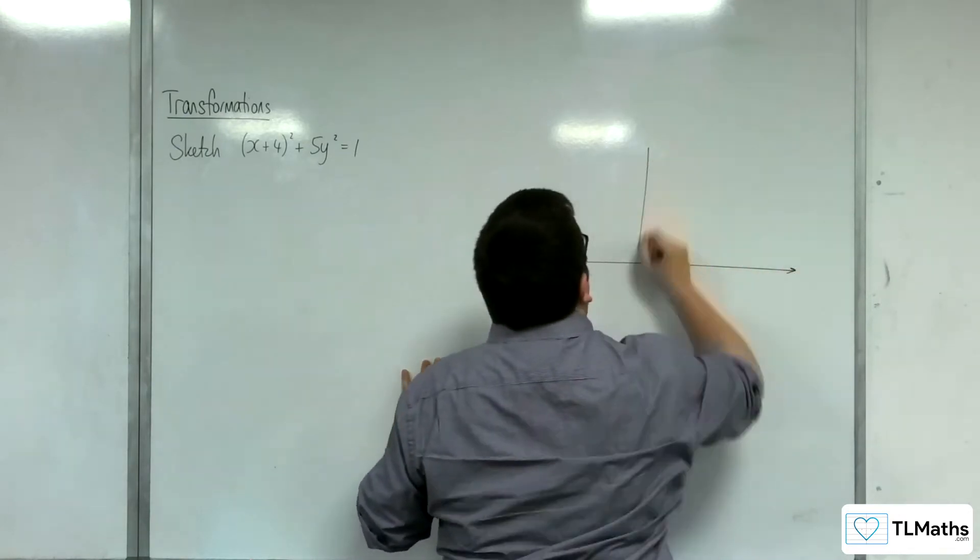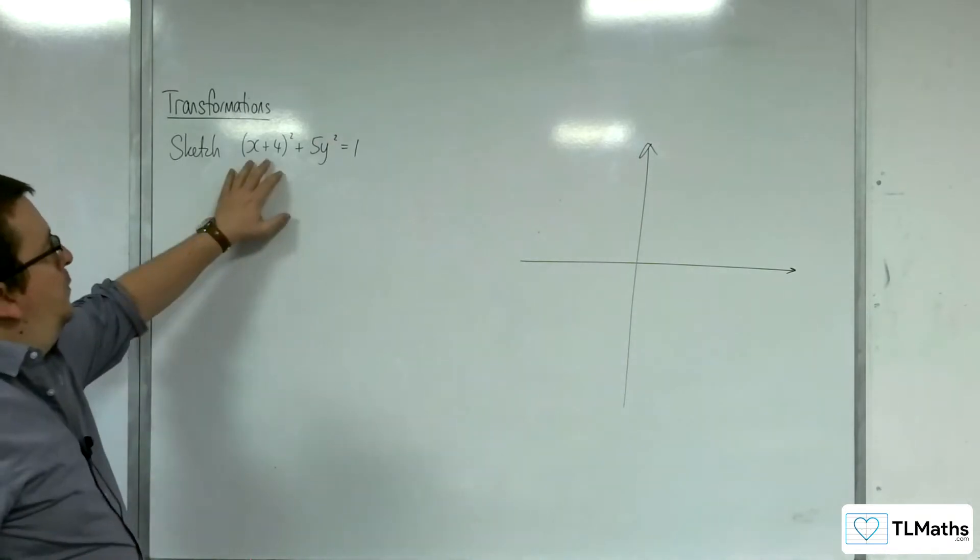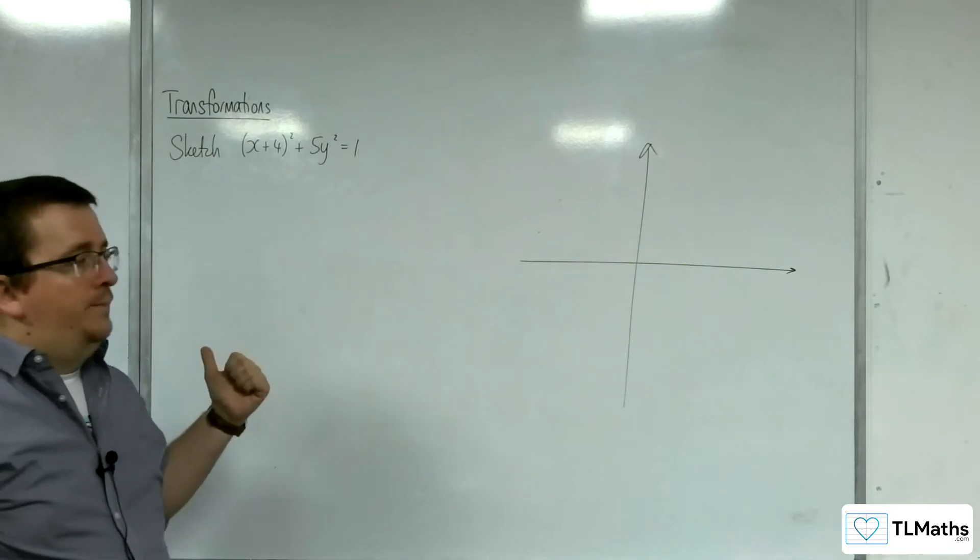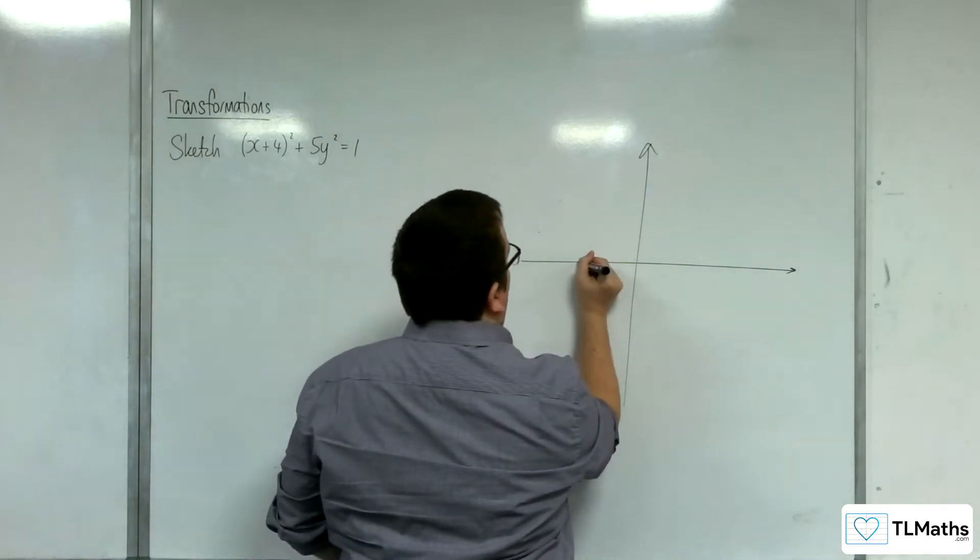So, let's see what we can make of this. Now, the x has been replaced with x plus 4, which means it's been translated 4 units to the left. So, the centre of this ellipse is at minus 4, 0.